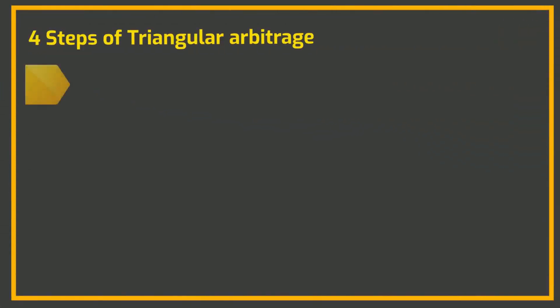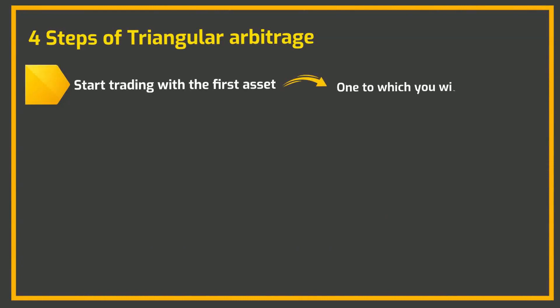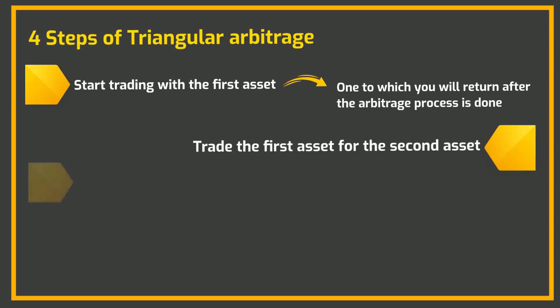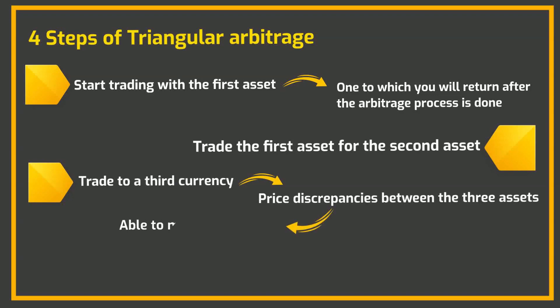For using triangular arbitrage, these four steps should be followed. Start trading with the first asset — this should be the asset we will return to after the process. Next, trade the first one for the second asset, then jump to the third asset in the triangular arbitrage. Due to the price difference between these three assets, you will now be able to make a profit.